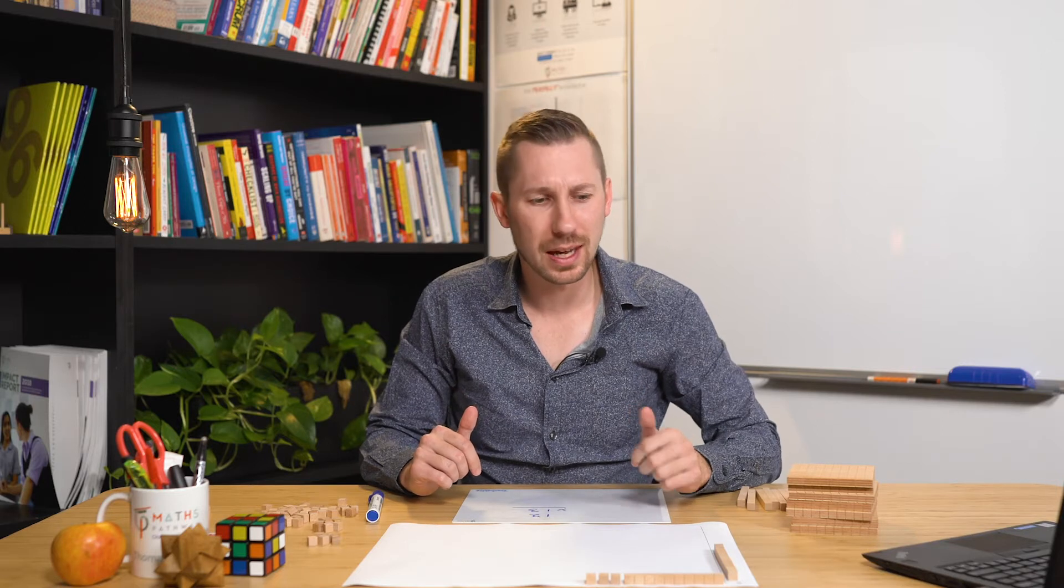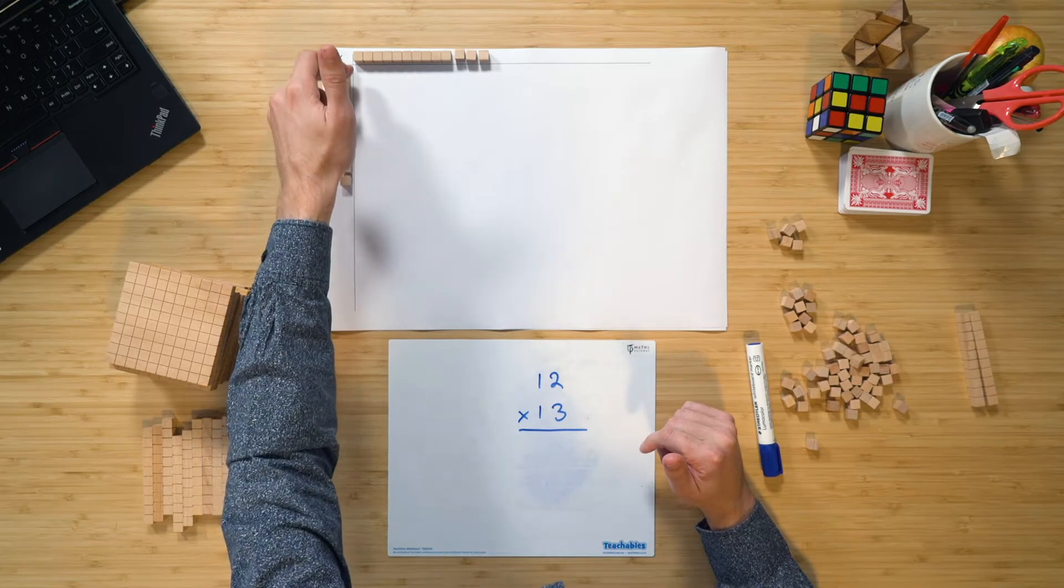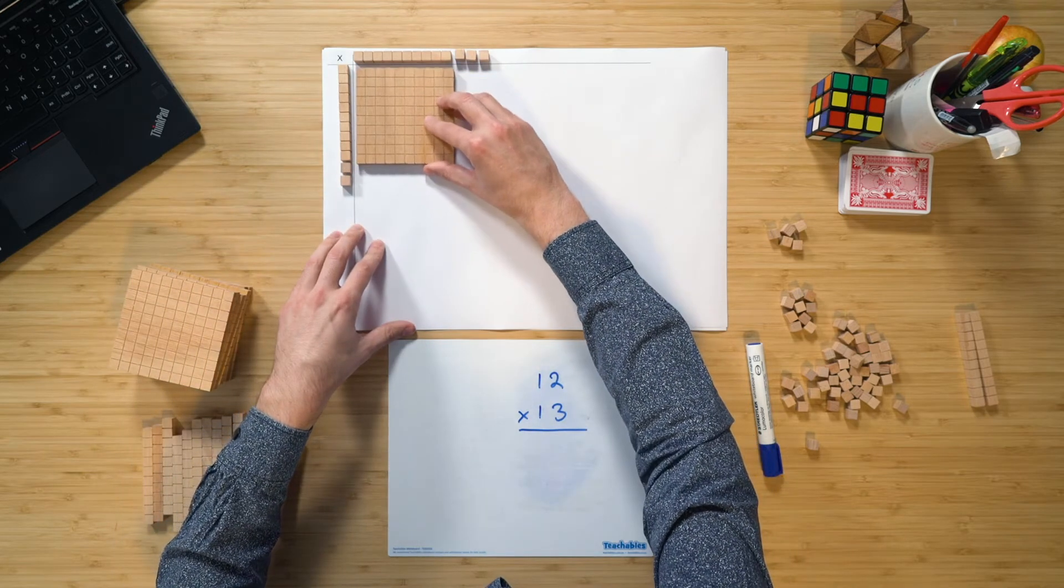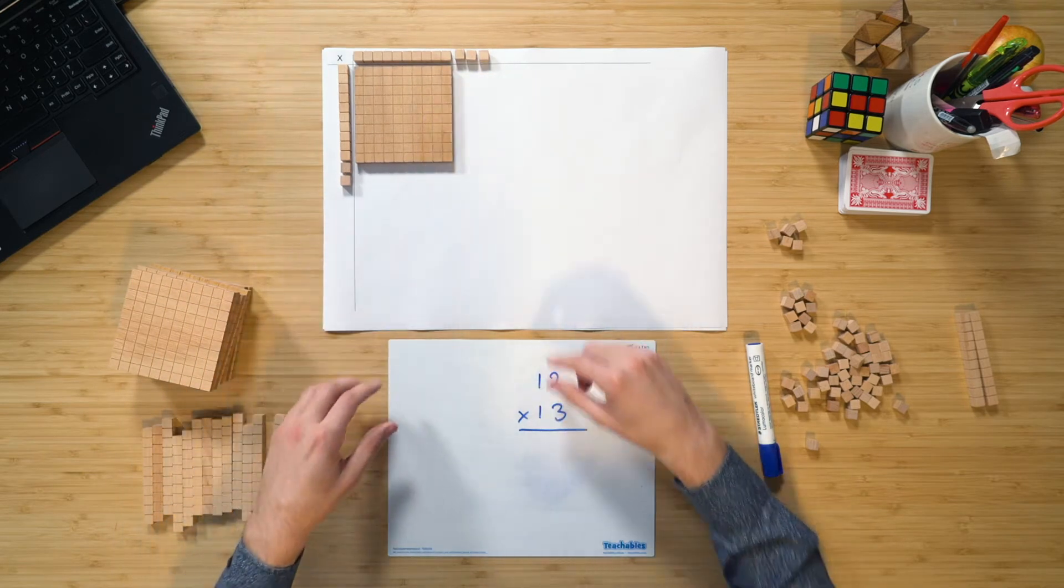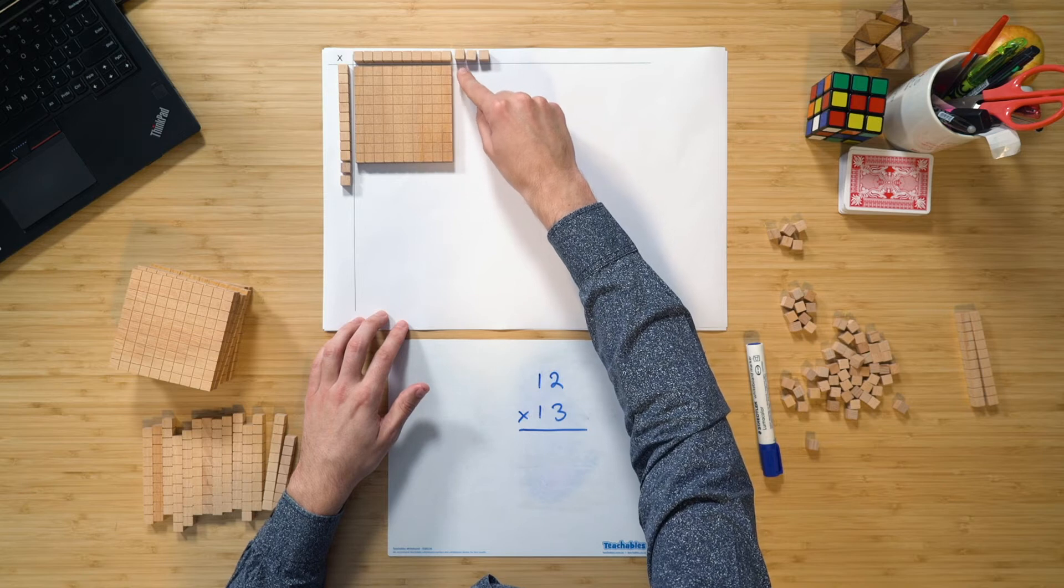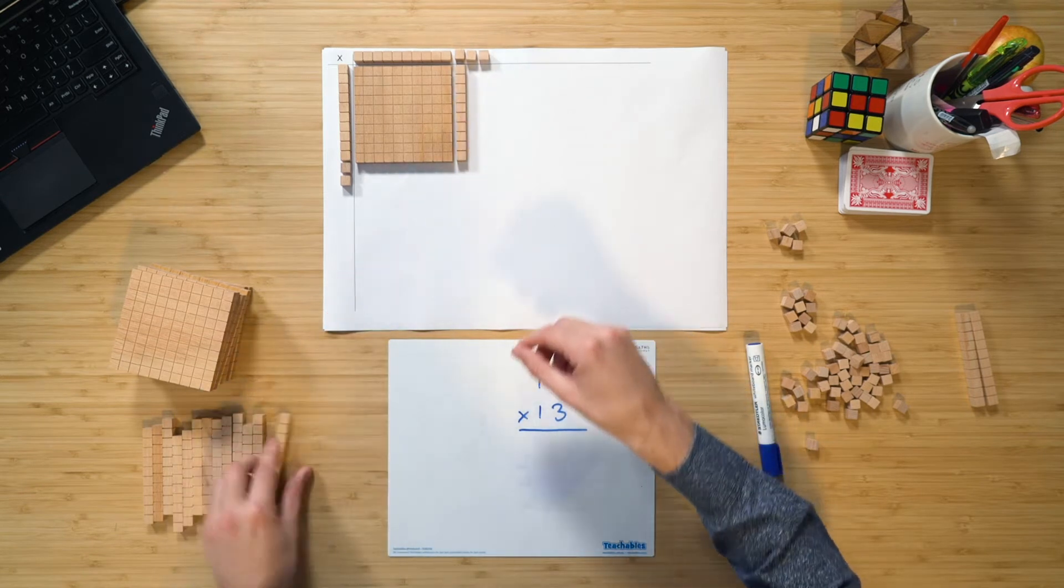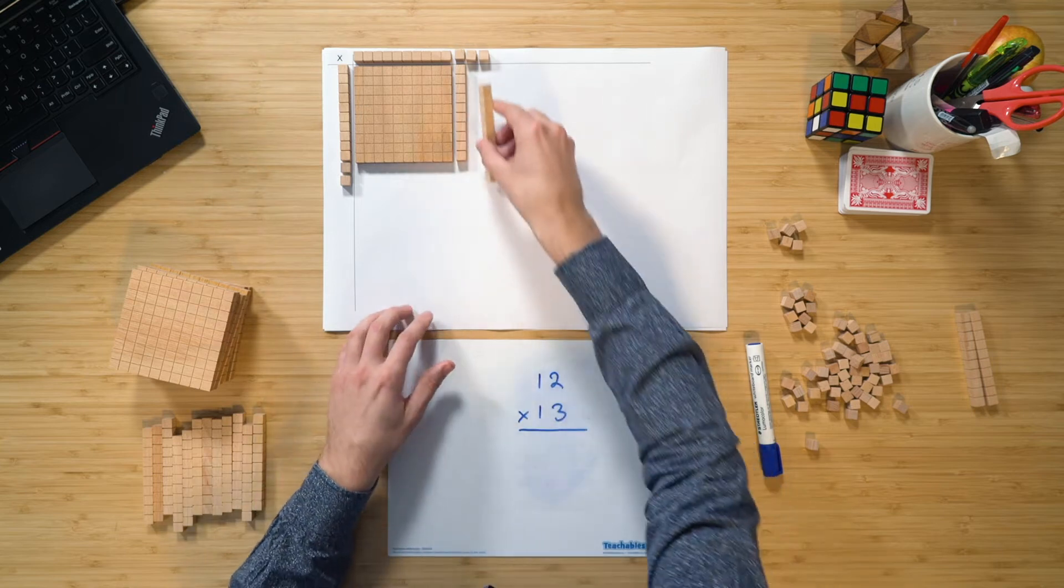We go through the same process once again. Whatever is this high by whatever is this wide. So we know there that that is going to be a 100. Same with what is this high by what's that wide. So if I have a look, it's going to be a 10. And we go through and we finish it off.